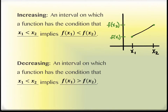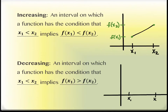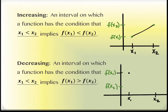Decreasing works the same way. We still need x₁ less than x₂ — so we're still moving from left to right on your graph. Now instead, f(x₁) is actually bigger than f(x₂), and that is what we mean by a graph decreasing. Notice it doesn't say how it decreases — the shape overall just has a decreasing tendency.